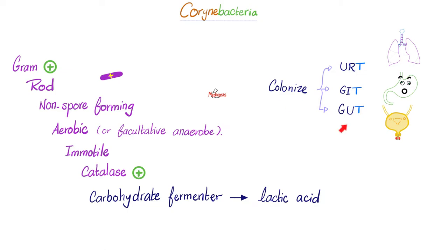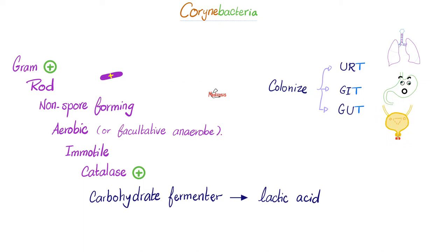For instance, today we'll talk about a bacteria known as Corynebacterium urealyticum, which causes kidney stones and urinary tract infections. Corynebacterium diphtheriae causes diphtheria. Corynebacterium jeikeium is an opportunistic organism that affects immunocompromised individuals, leading to wound infections, septicemia, endocarditis, and others. Arcanobacterium causes wound infection and scarlet-like fever, not to be confused with the scarlet fever caused by group A beta-hemolytic streptococci, known as Streptococcus pyogenes.